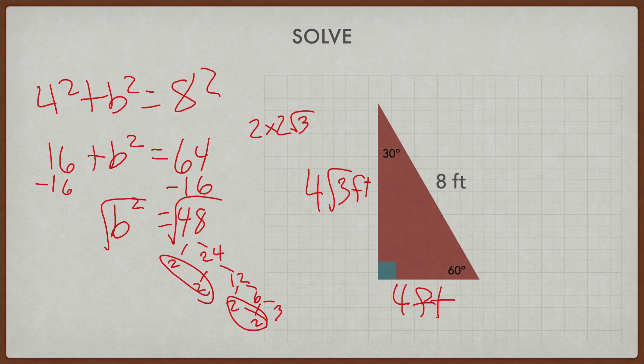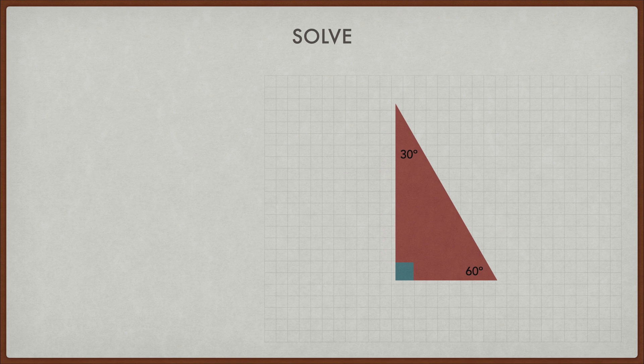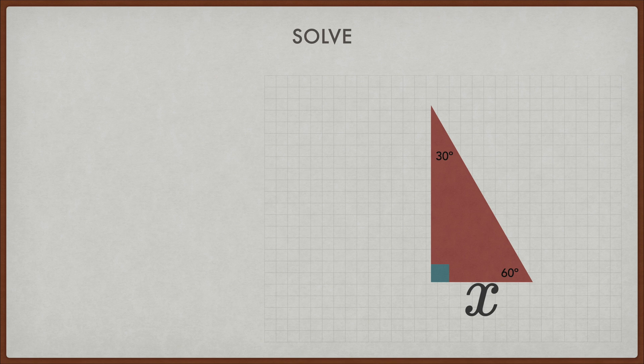So the big rule is, we really want to get down here to our short leg, which is what I'm going to call the one opposite the 30. The short leg is going to be times 2 to get to the hypotenuse times the square root of 3 to get to 4 square root of 3. But we've now done it twice. That's not a pattern. The only way that we can definitively prove this is if we use a variable.